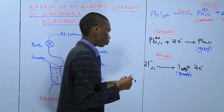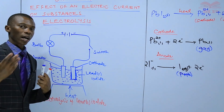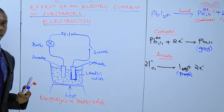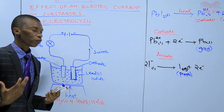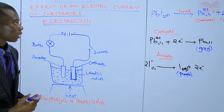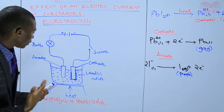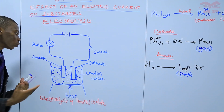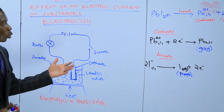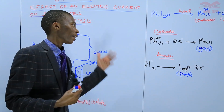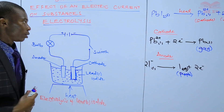The physical states should be included in the equations. At the cathode there is gain of electrons, and at the anode there is loss of electrons. That is what happens when you conduct electrolysis of lead(II) iodide, and those are the equations which you expect at the cathode and at the anode.